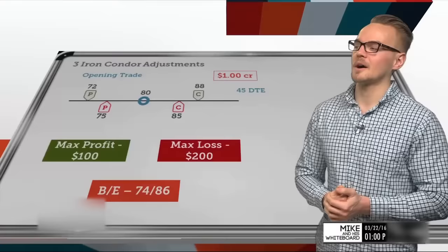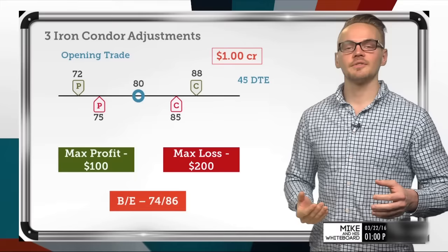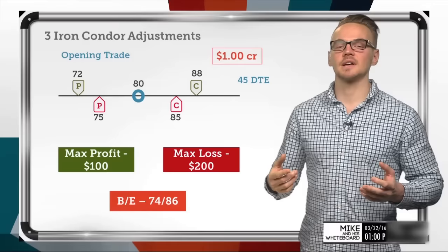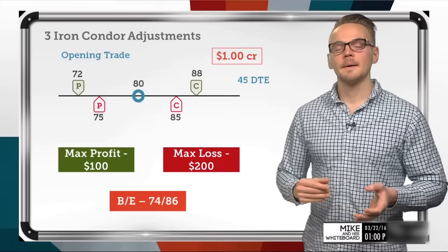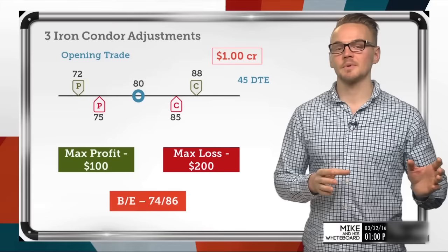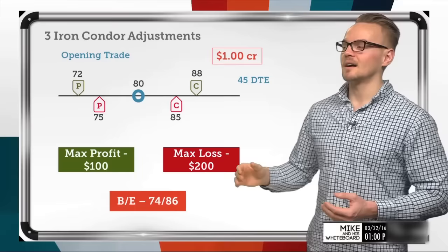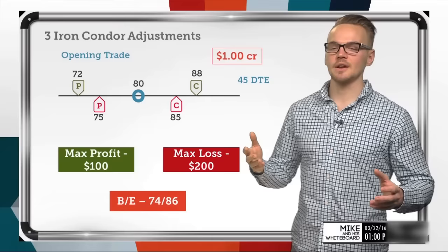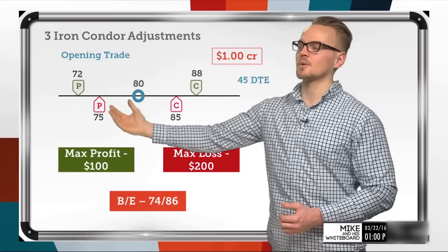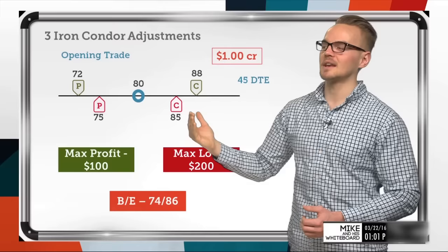We're going to talk about the opening trade with an iron condor, which is basically the combination of an out-of-the-money put spread that we're selling along with an out-of-the-money call spread that we're selling. If you think about these strategies as combinations of other things, it becomes a lot easier to mentally understand how these spreads are going to be adjusting. Our max profit is going to be realized if this stock price trades anywhere between 75 and 85 at expiration.